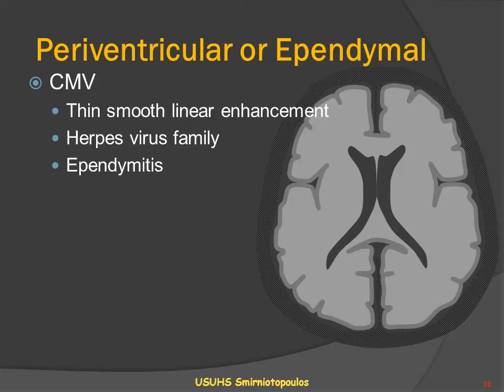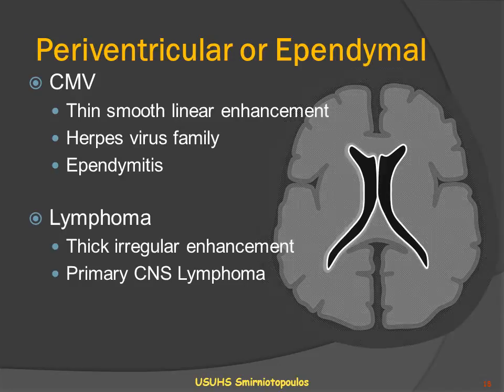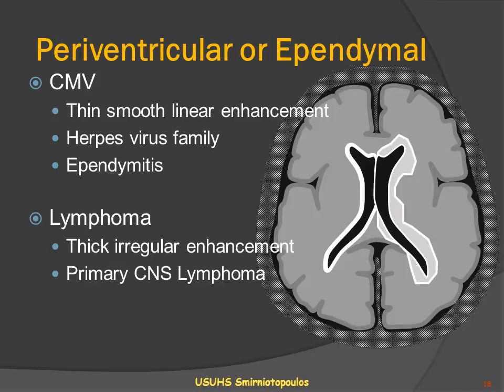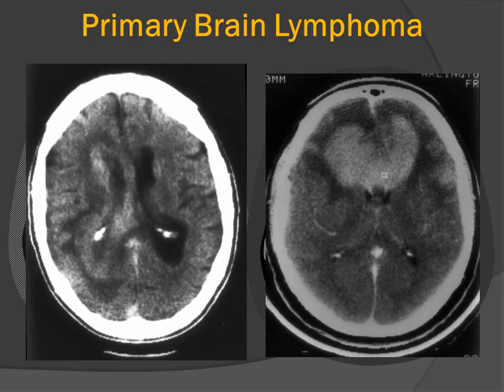Other periventricular lesions include cytomegalovirus (CMV), which typically gives a very thin line of periventricular enhancement by producing an inflammation of the ependyma itself — ependymitis. In contrast, CNS lymphoma will give us a thick periventricular area of abnormality and enhancement, and oftentimes a very irregular rind around the ventricles. So these two processes, CMV ependymitis and lymphoma, are usually distinguishable on imaging characteristics.